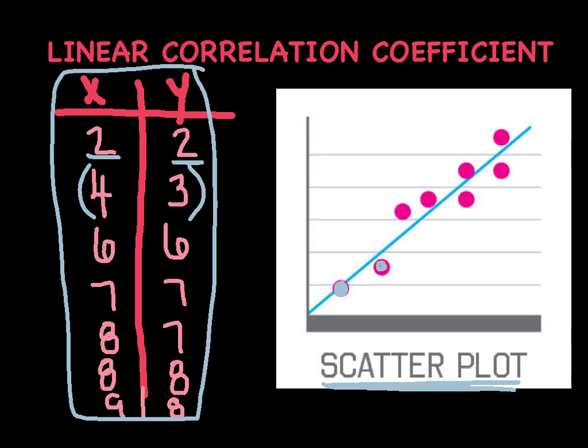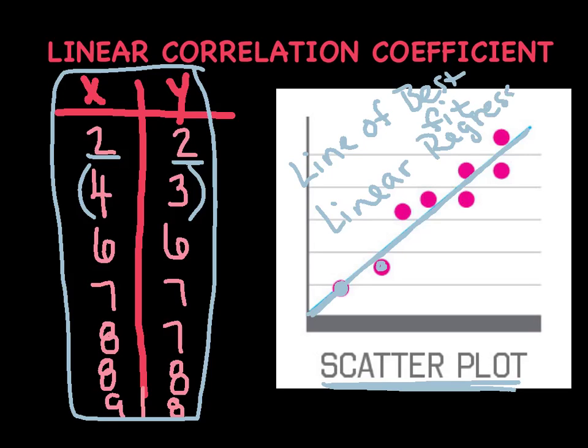Once we get our scatterplot, we're trying to create what's called a line of best fit. And this line of best fit is a lot of times called a linear regression. So line of best fit and a linear regression are one and the same thing. They're synonymous with each other.